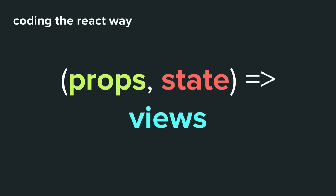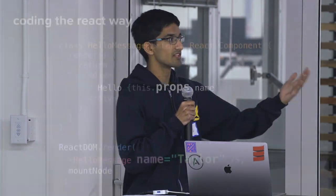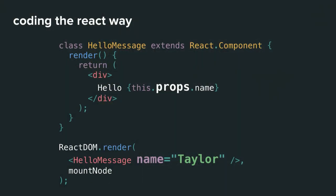With React, you treat your application as a function from data — coming from your server as props, and local user input as state — transforming it into views. Components take in props from somewhere else, have locally contained state, and turn that into something to display to the user. In JavaScript you write a class extending React.Component with a render function that uses JSX, a form of string interpolation allowing XML literals.